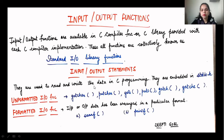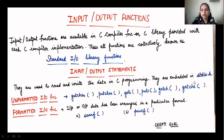These input output statements are available in the C compiler and are embedded in stdio.h. The library holding these input output statements is known as the standard input output library. The standard input output library consists of the unformatted input output functions and the formatted input output functions.